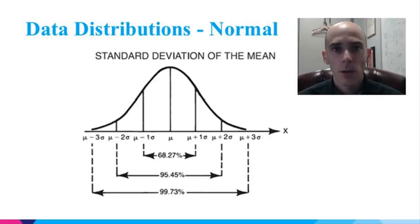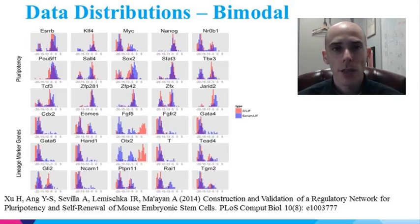It has a defined mean and the standard deviations from the mean specifies the spread of the data, as well as the probability of observing extreme values. In biology we face many other types of distribution, and this is an example of a bimodal distribution that we came across when we analyzed single cell gene expression data measured in mouse embryonic stem cells.